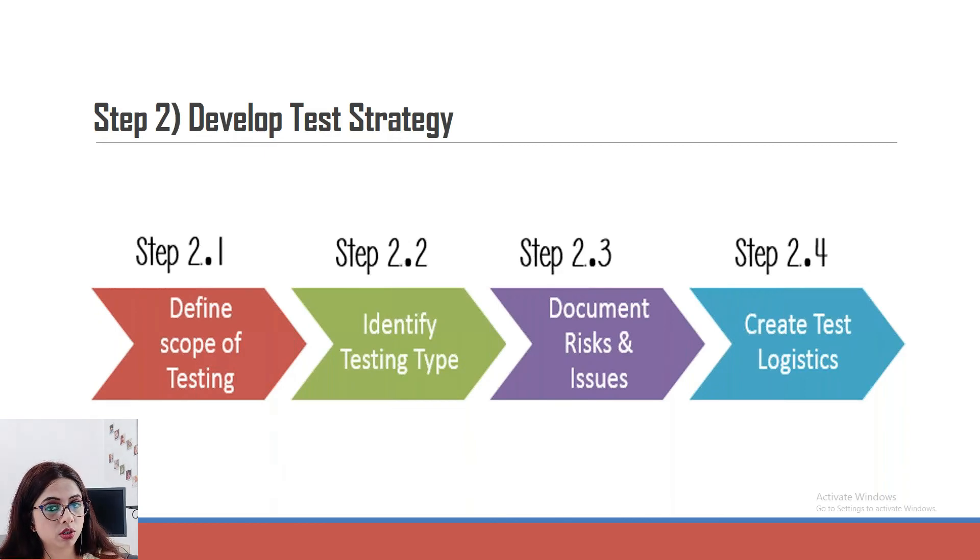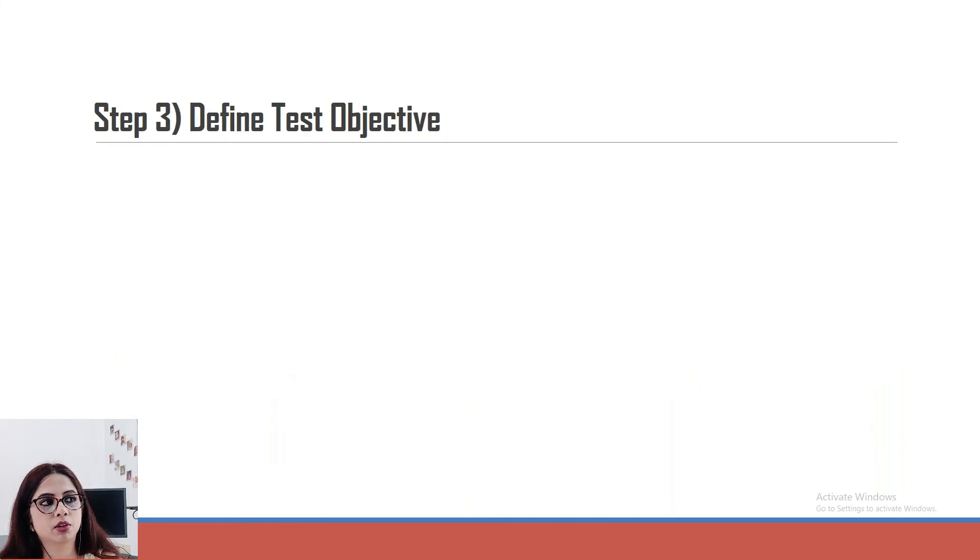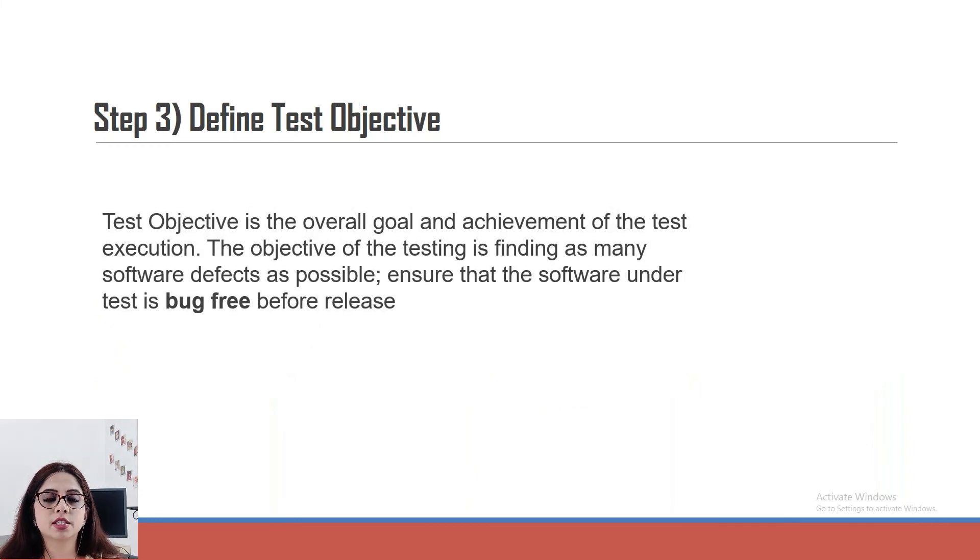But if you're not doing security testing, this might happen - the security risks can be involved. And the logistics, like how will we proceed with the testing - everything should be mentioned as a part of the strategy. Objective of testing - why we are doing this type of testing and what we will get. So mostly it will be a quality outcome with no bugs in the system.